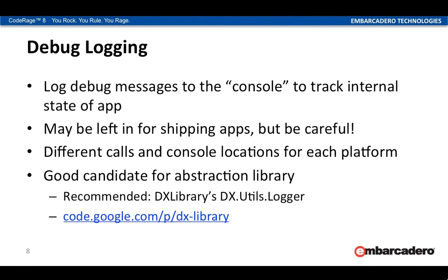Debug logging is a way to send messages from your app to the console to track the internal state of your app. You can actually leave this in shipping apps, but you want to be careful because you could be divulging important information you don't want public — anybody could read these messages. Or you may be bogging the system down by logging too much information. However, it can be useful because you can have somebody grab the log file and send it to you later.